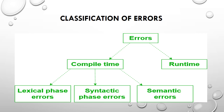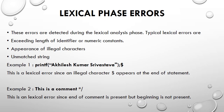In compile-time errors, there are three types of errors possible. One is the lexical phase error, one is the syntactic phase error which is identified at the syntax analysis phase of the compiler, and the semantic errors which are identified at the semantic analysis phase.